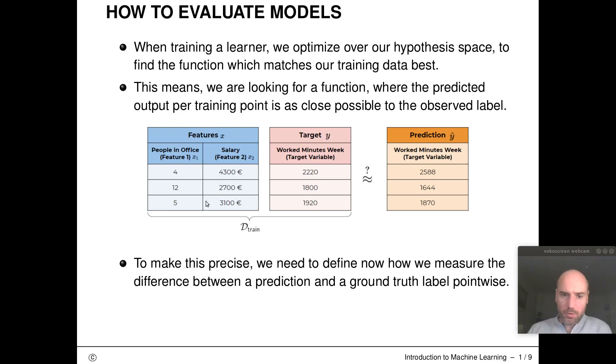So here for example we have three observations, three ground truth labels, and for a given model from our hypothesis space we also would have three predictions, one per observation each. We want these predictions on the right-hand side to be as close as possible to these ground truth labels on the left-hand side. To make this mathematically precise we now have to define how we measure these differences point-wise.